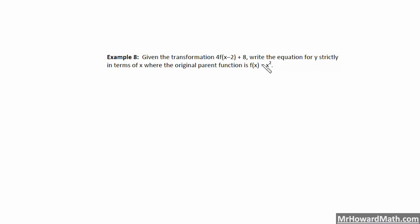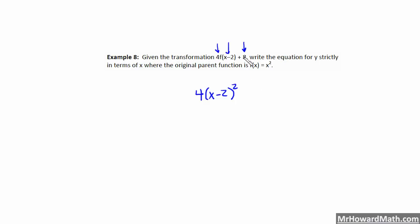Last example — example 8: give the transformation for 4 times f of (x minus 2) plus 8. Write the equation for y strictly in terms of x, where the original parent function is f of x equals x squared. We're applying a vertical stretch of 4, moving it right 2, and moving it up 8 to the parent function x squared. So we have 4 out in front for the vertical stretch, then (x minus 2) squared to move it right 2 — it's opposite of the sign — and then plus 8 for the vertical shift up. The answer is y equals 4 times (x minus 2) squared plus 8.